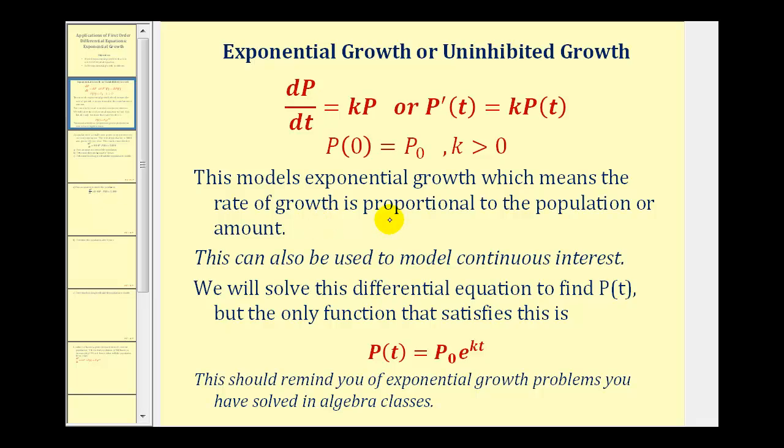This means the rate of growth is proportional to the population. This is telling us the derivative of the function is equal to a constant times the function. In part one, we actually solved this differential equation and verified that the exponential function given below is the general solution to this differential equation.